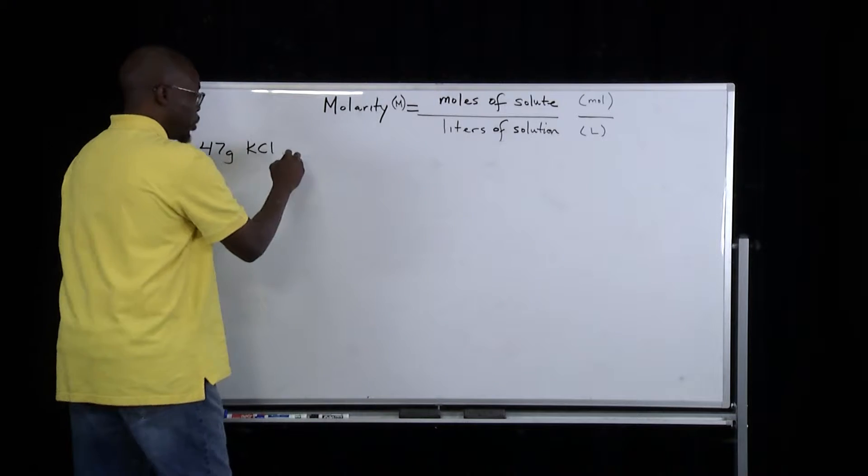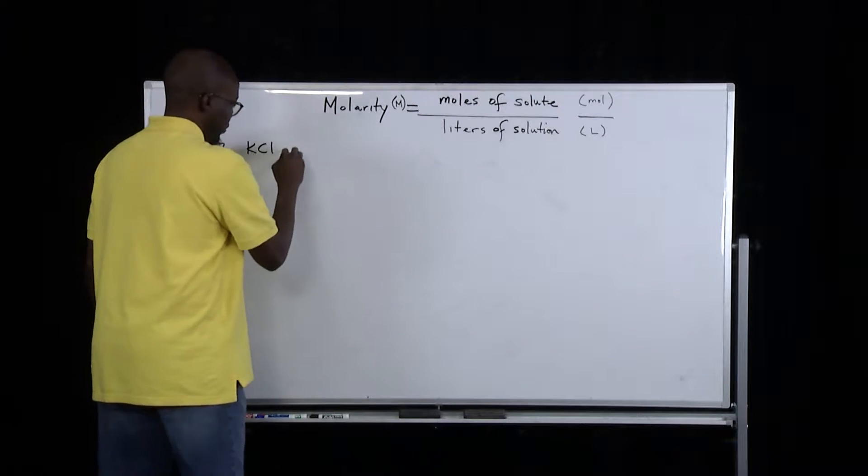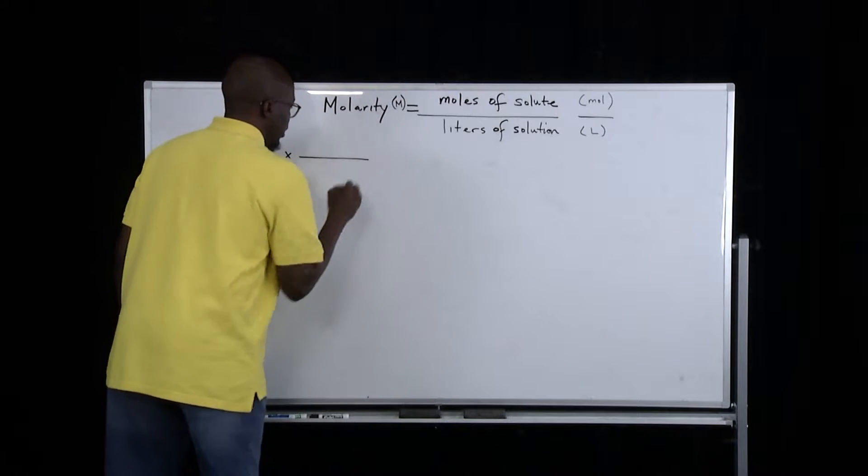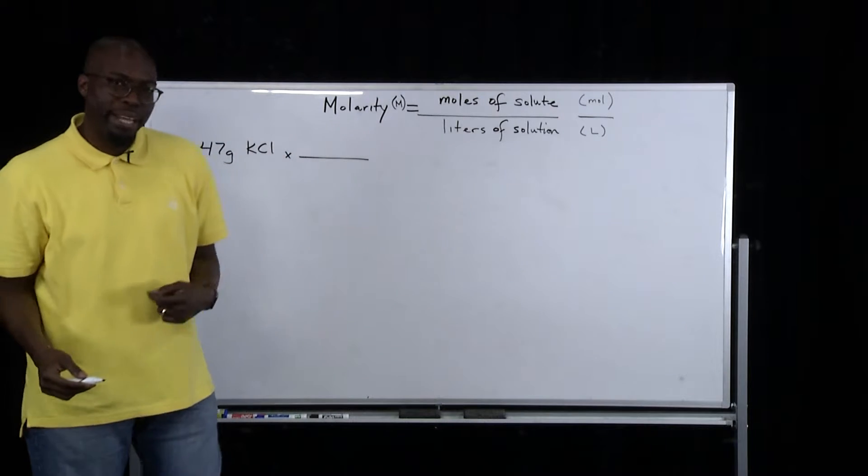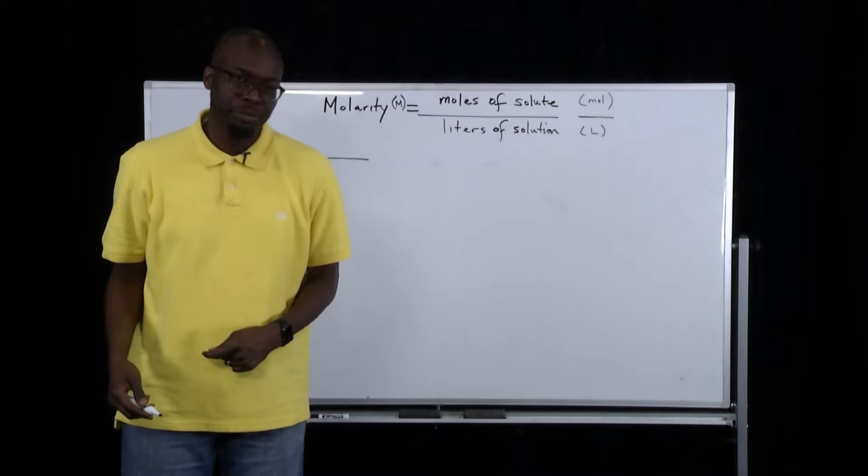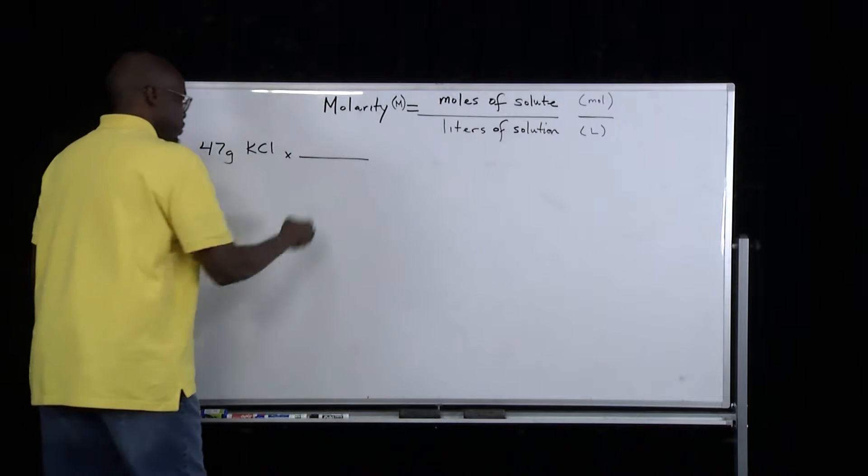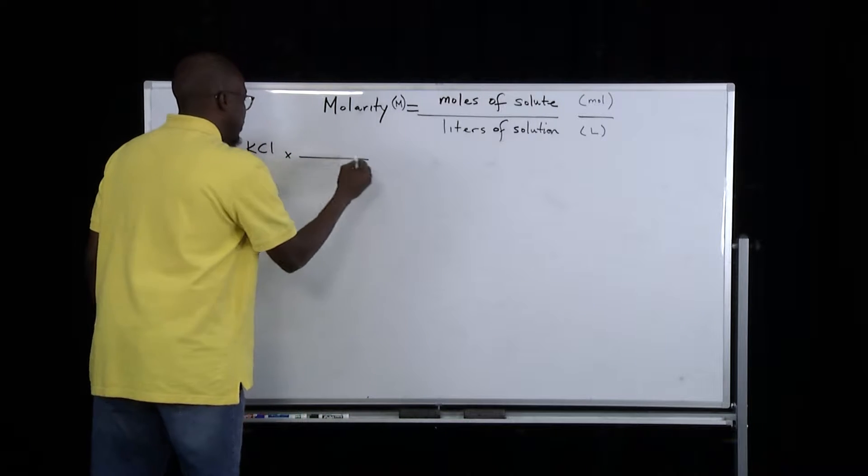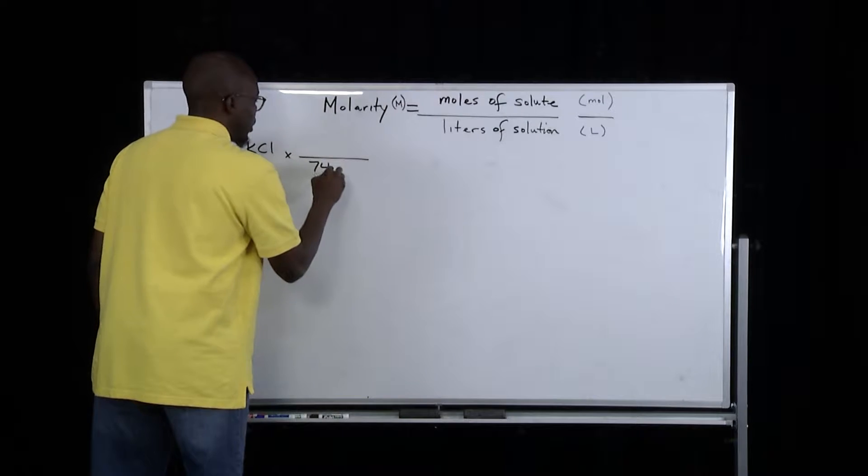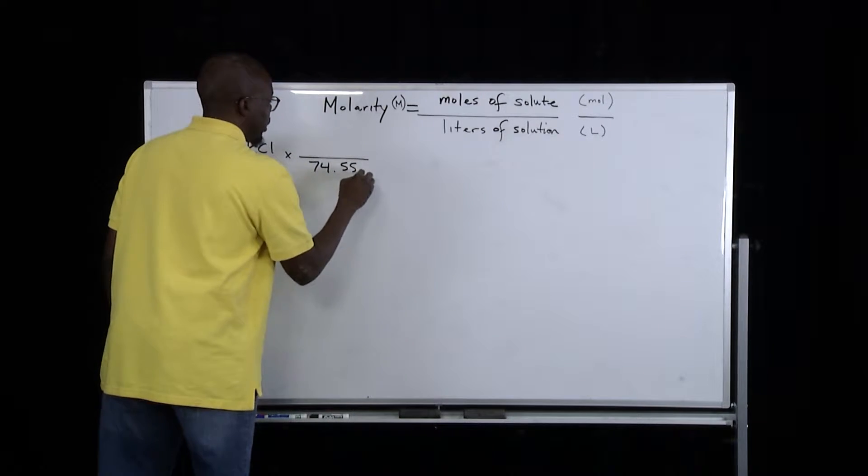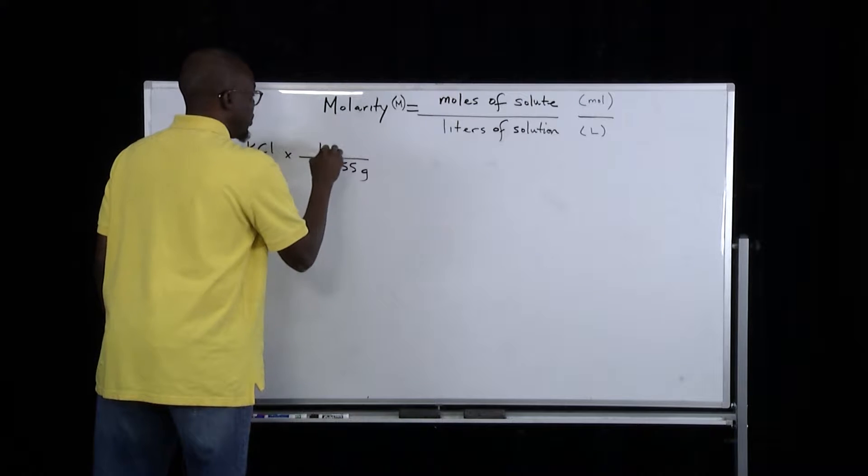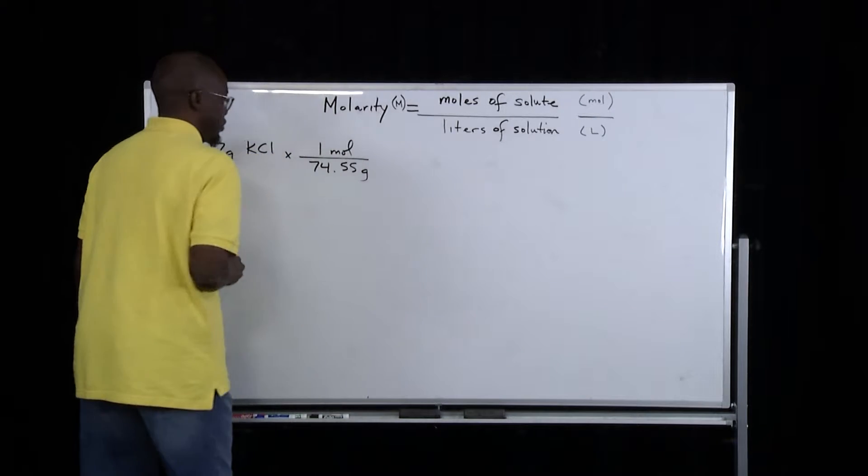In order to solve for the number of moles of solute, we must first figure out what the molar mass is of potassium chloride. The molar mass of potassium chloride is 74.55 grams per mole.